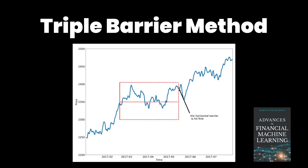Let's recap the logic behind the triple barrier method. If you want more details, I recommend the book 'Advances in Financial Machine Learning,' which has a chapter on labeling where this method is explained. We have three barriers: one vertical barrier that is the time limit, and two horizontal barriers that are the take profit and stop loss, depending on whether the position is short or long.